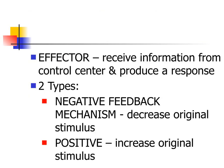Once the control center has determined what action must be taken, it sends that information to the effector organ. For example, in the case of blood pressure, it will tell the heart to slow down the heart rate to reduce blood flow. In this example, the heart is the effector organ.